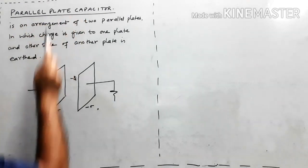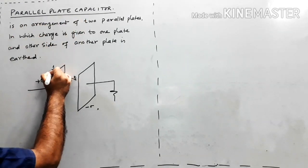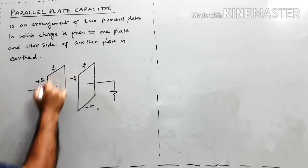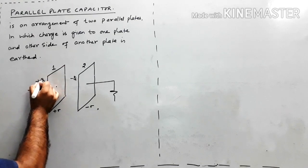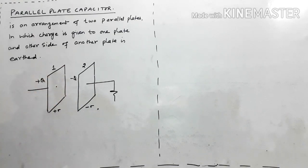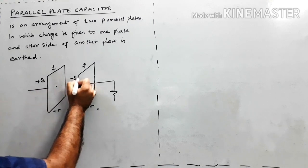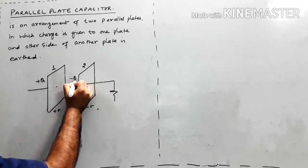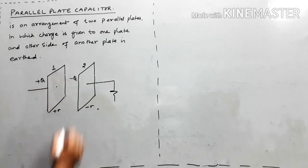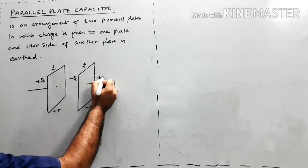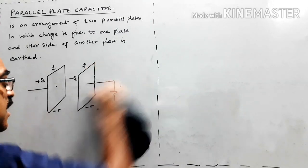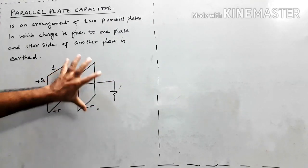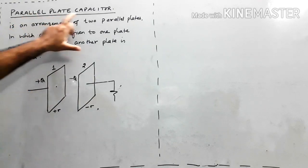In a parallel plate capacitor there are two plates — plate one and plate two. Plate one is given a positive charge. By induction, minus Q charge is induced on the inner side of plate two, and plus Q charge on its outer side goes to earth. This is the arrangement of a parallel plate capacitor.